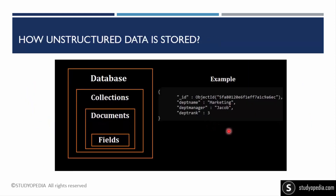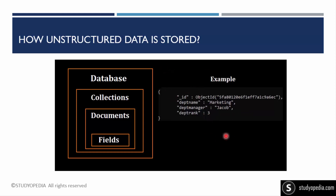Moving further: how is unstructured data stored? It is stored in NoSQL databases. Comparing with structured data: in SQL we have a database containing tables with rows and columns. In NoSQL, a database contains collections, and within collections we have documents and fields. Unstructured data storage is demonstrated using a MongoDB example, which we will discuss in more detail later.